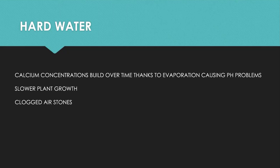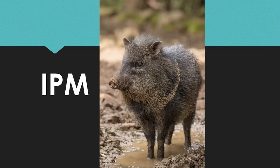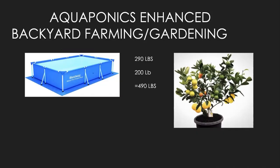Integrated pest management — and normally when you think about IPM you think about cabbage loopers and hornworms. We're thinking about javelinas. One of our farmers had a herd of these come to his farm and eat his vegetables. So we have to deal with all kinds of things when looking at integrated pest management.